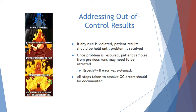If the warning rule is violated but no other rules are violated, you can accept the run. However, if any other rules are violated in conjunction with the warning rule, patient results should be held until the issue is investigated, identified, and resolved. Once the problem is resolved, patient samples from previous runs may need to be retested — especially if a systematic error is identified, as it has a much higher likelihood of affecting multiple samples than a random error. Any steps taken to resolve QC errors should be documented according to your lab's protocol.